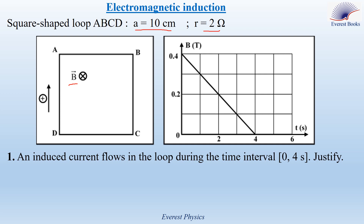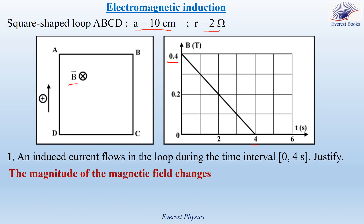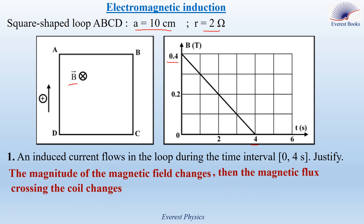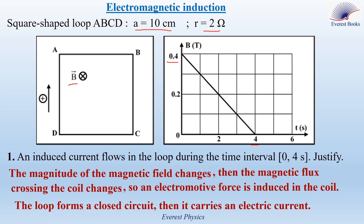Part 1. An induced current flows in the loop during the time interval 0 to 4. Justify. Look at the second figure. At time 0, B is equal to 0.4 Tesla, and then B decreases to 0 at time 4 seconds. So the magnitude of the magnetic field changes. Then the magnetic flux crossing the coil also changes. Therefore, an electromotive force is induced in the coil. But since the loop forms a closed circuit, then it carries an electric current.